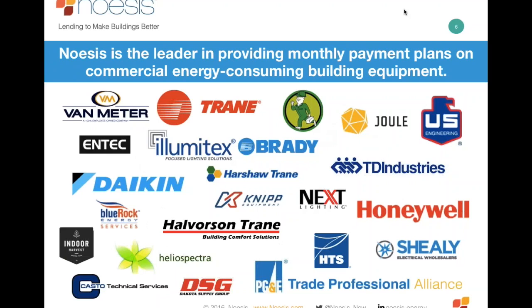Nuesis is the leader in providing monthly payment plans on commercial energy-consuming building equipment. It's simple — don't think of this as performance contracting that takes six months and slows down your process. It's no different than selling a $50,000 copier and telling the CFO what the payments are. We have about 250 partners including large ones like Trane and Daikin, utilities like PG&E, and mid-sized mechanical and lighting firms.